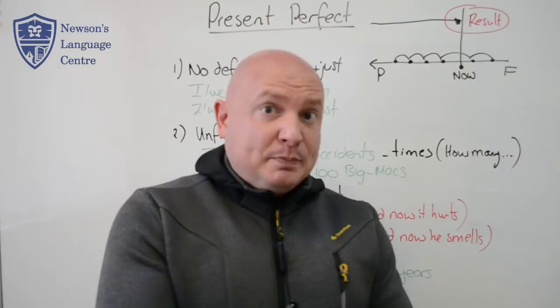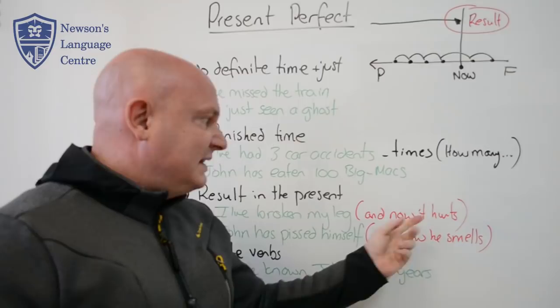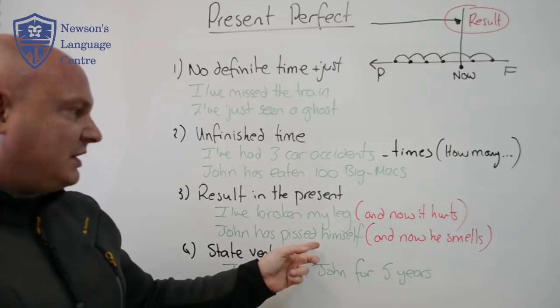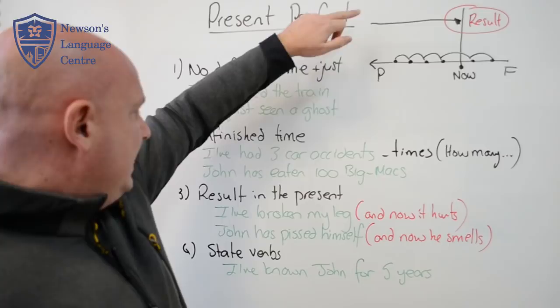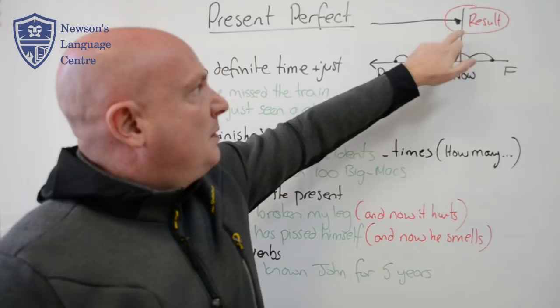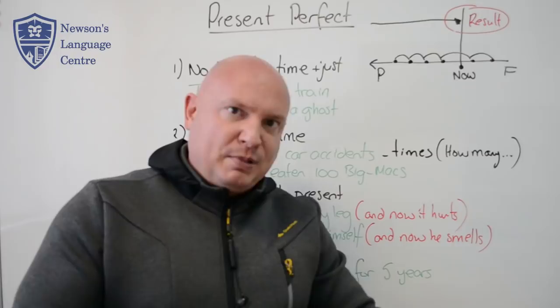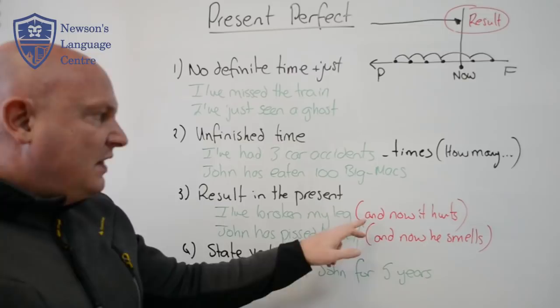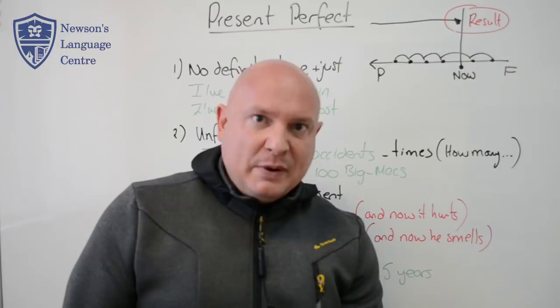So if I say 'I've broken my leg,' I can add a present tense result: 'and now it hurts.' If I say 'John has pissed himself,' the result is 'and now it smells.' So: 'I've broken my leg, and now it hurts.' 'John has pissed himself — the result is, now he really smells.' Comparing with the past simple: if I say 'I broke my leg,' that could have been a long time ago, and now it's fine. That's the difference.